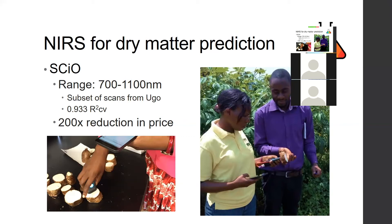We have reduced accuracy from 96.7% with holdout cross-validation to 93.3%, but 93.3% is still pretty high for a tool that represents a 200-times reduction in price — each unit is about $300 instead of tens of thousands of dollars. So we're looking at something feasible for breeders to use in their programs, capable of taking dry matter data quickly and accurately in the field without transporting samples.